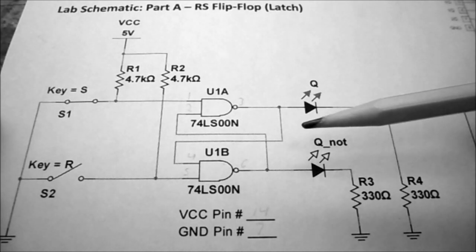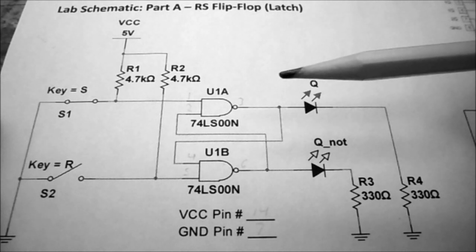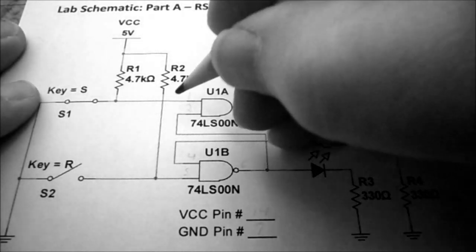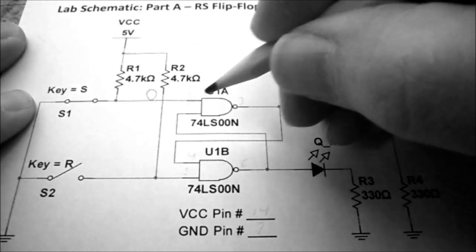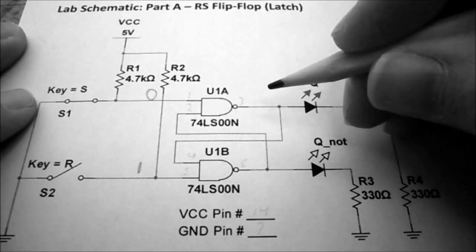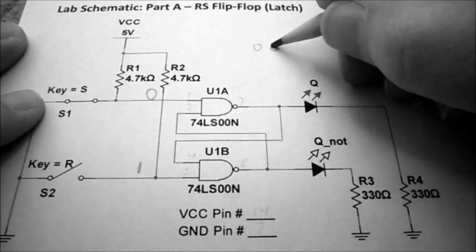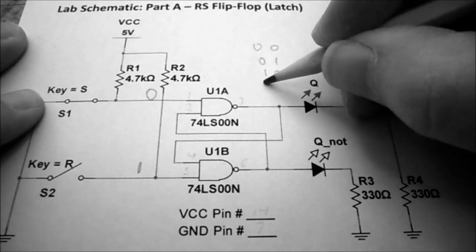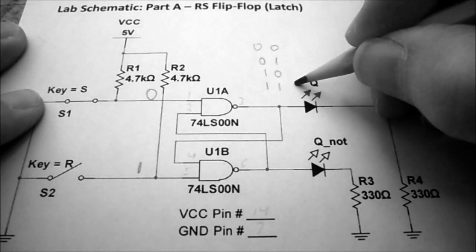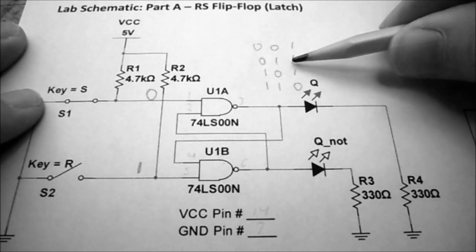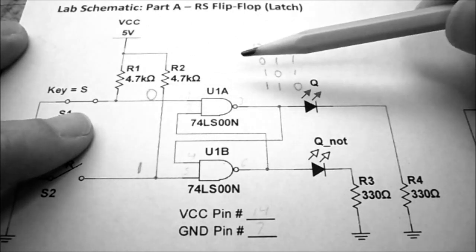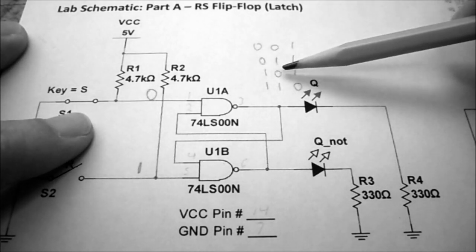You have to assume what an output is going to be and then work backwards. For the first condition — to set the flip-flop — we put a logic zero on the set line and a logic one on the reset line. It's very important you understand the truth table for a NAND gate: when both inputs are one, the output is zero; for all other conditions, the output is one. So if I'm putting a zero in, the output of the first NAND gate is going to be a one.